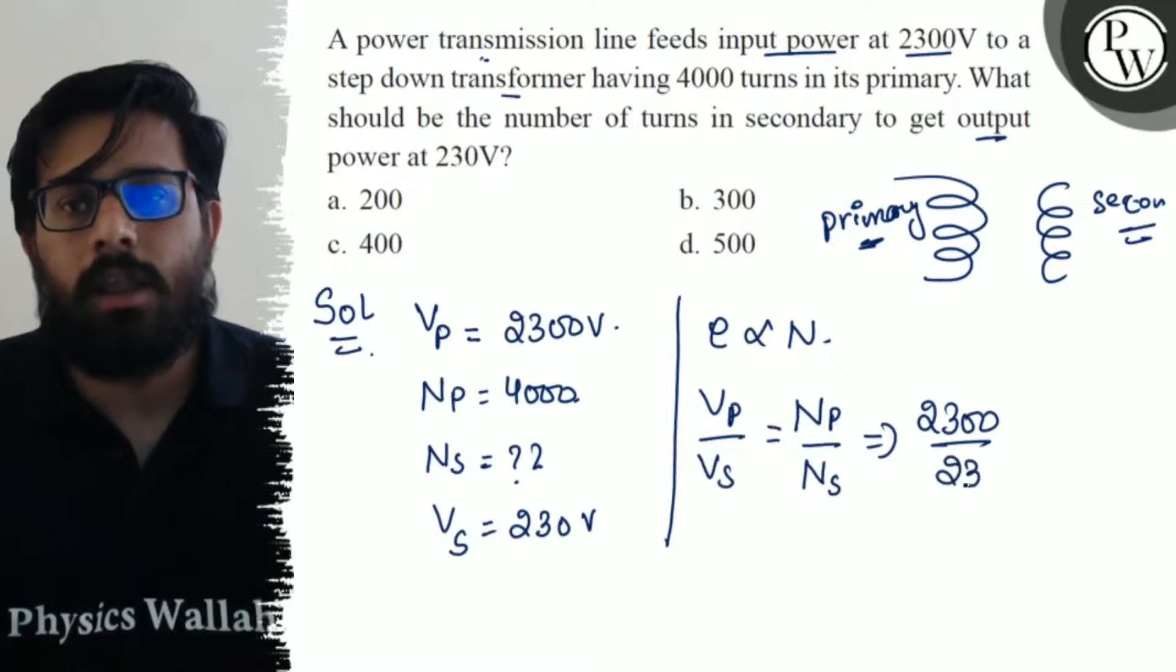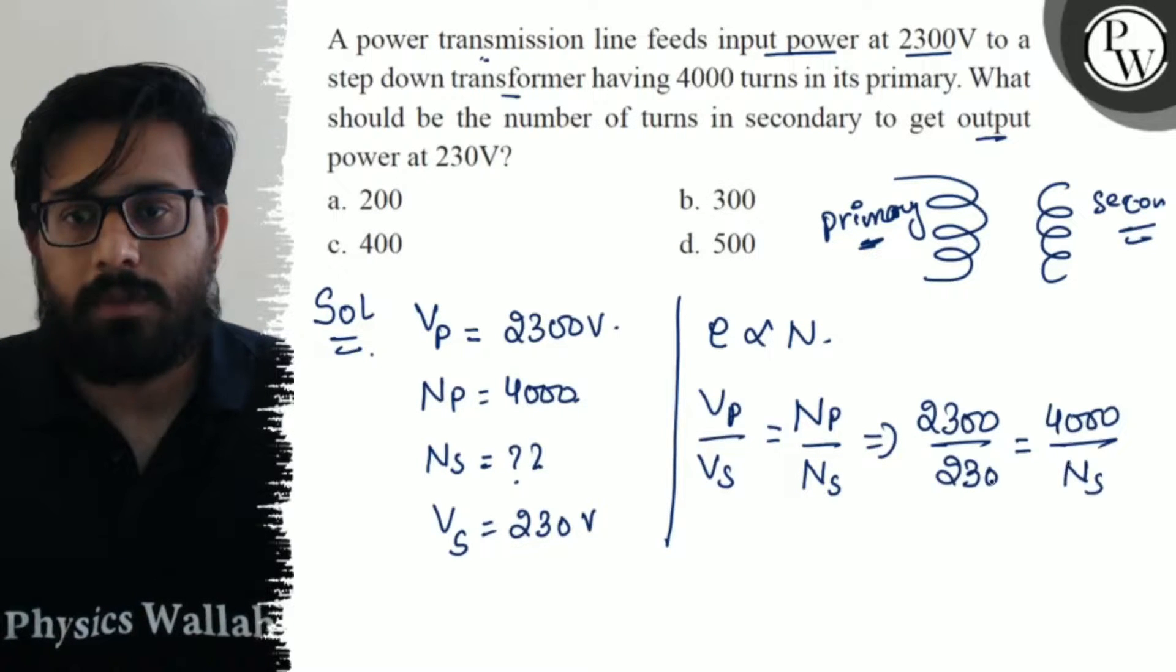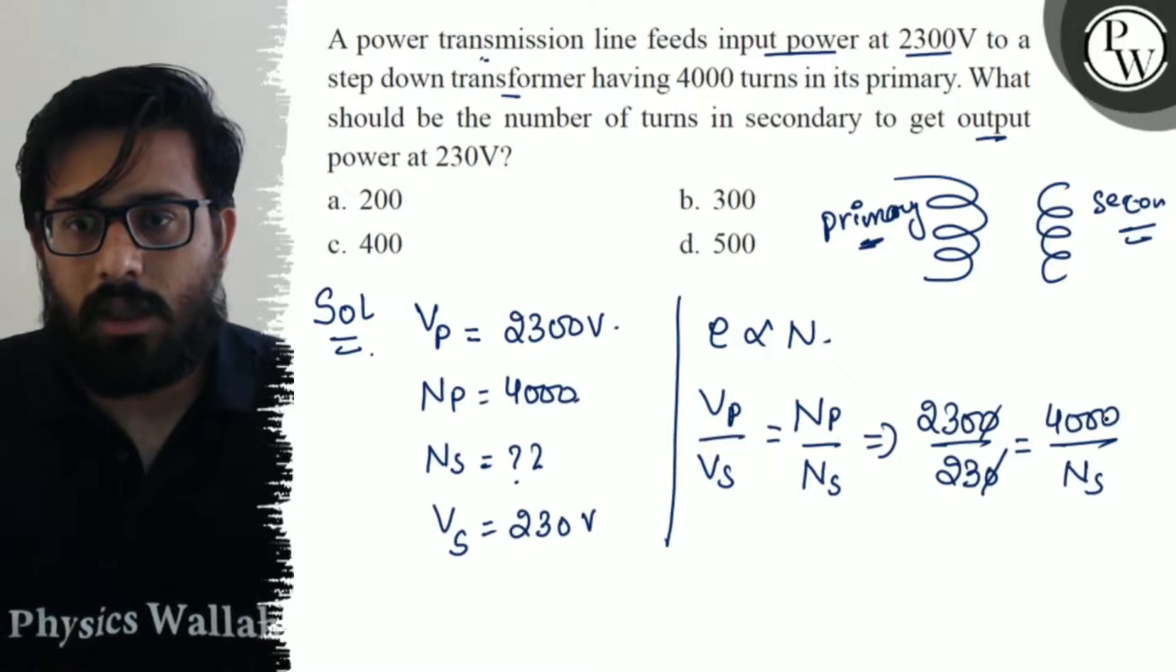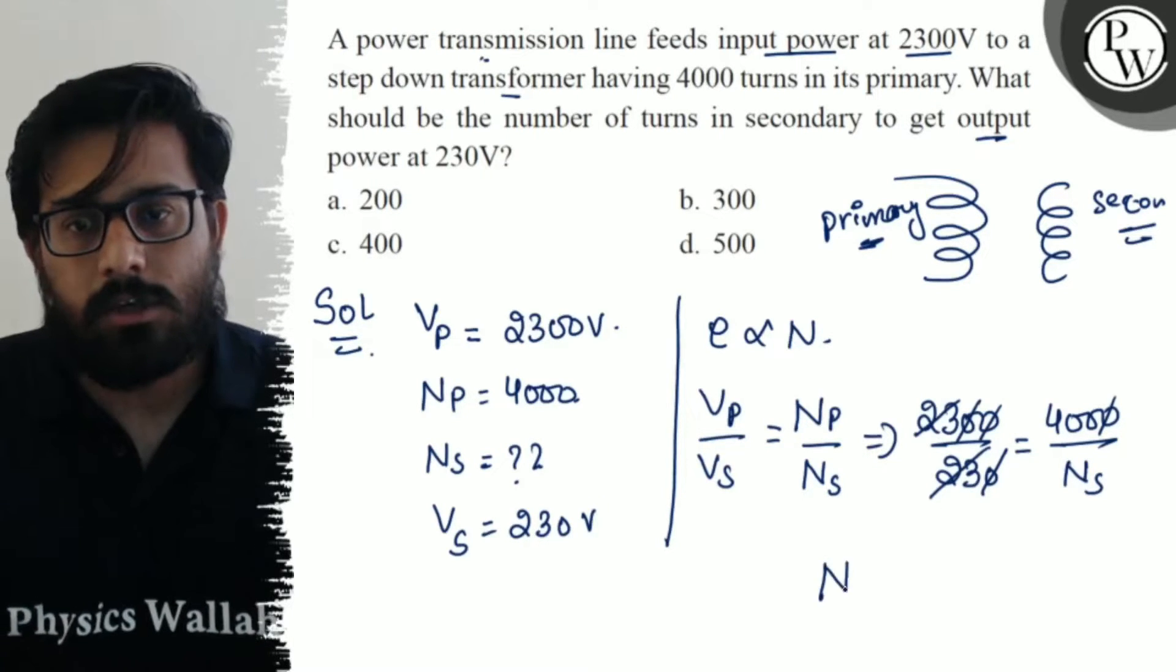For this simple problem, I've got 2300 upon 230 equals 4000 upon number of turns in the secondary. So zeros cancel out, zeros cancel out, 23 and 23 cancel out.